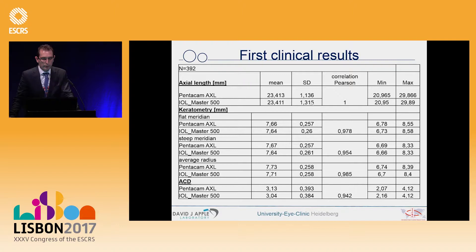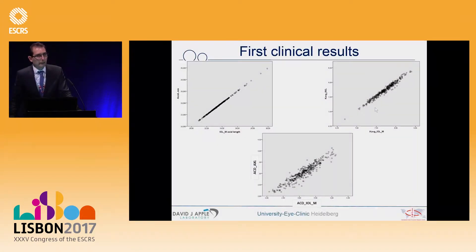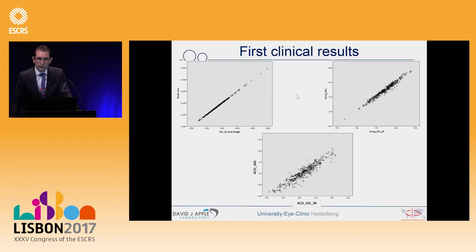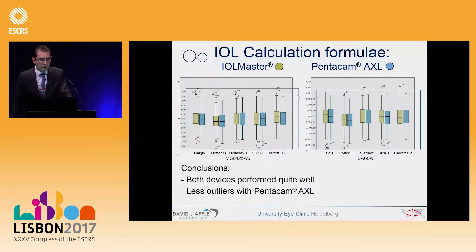The correlation between the two devices is nearly perfect. With regard to keratometry values — the flat and steep meridian and the average radii — there is still a very high correlation between the two devices across the whole group. Anterior chamber depth measurements also correlate very well. In the scatter plots for axial length, K-values on average, and anterior chamber depth, the regression lines remain in the same quadrant, confirming high reliability for both devices.